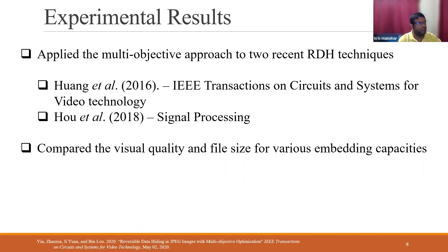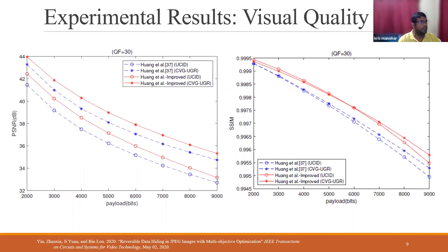For experimental results, they looked at two recent reversible data hiding techniques in the transform domain — by Huang et al. and Hu et al. — and applied this methodology. Given a particular embedding scheme, they work out whether each pixel is embeddable, fill the vectors, and solve for the decision variable V. They then compared visual quality and file size over various embedding capacities between their selection procedure and the original techniques as proposed by the authors.